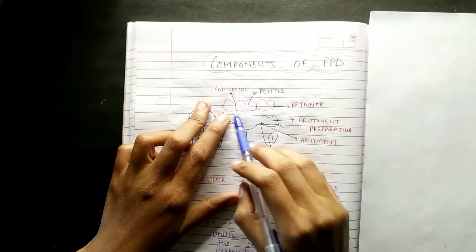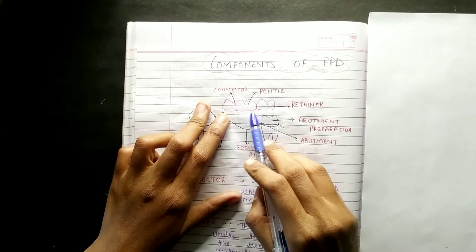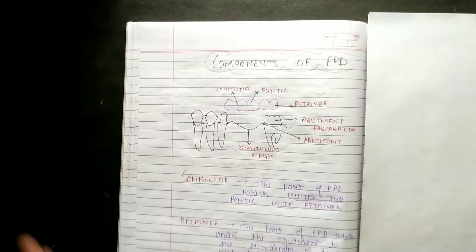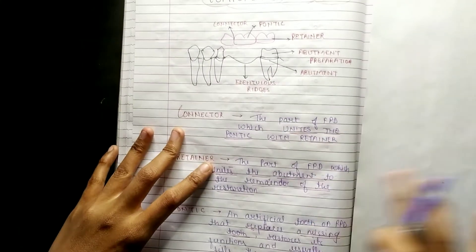And that thing which connects the pontic and retainer is called connector. So this is all. Now let's see the definitions.